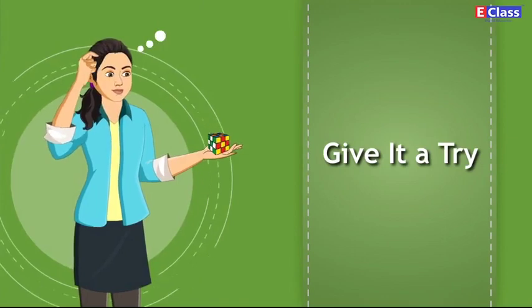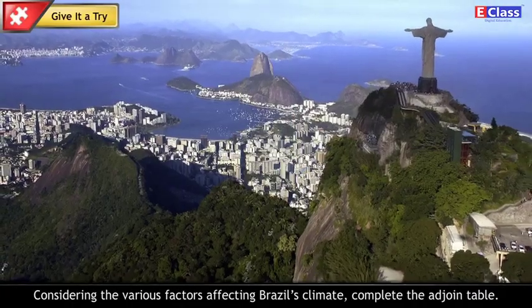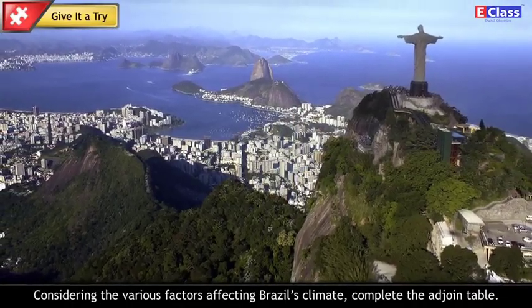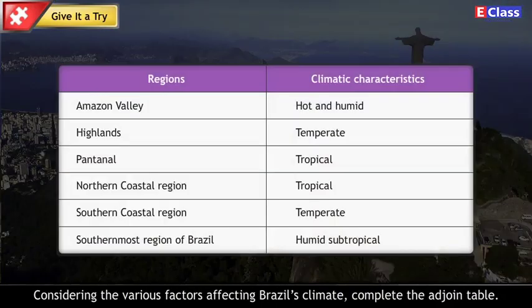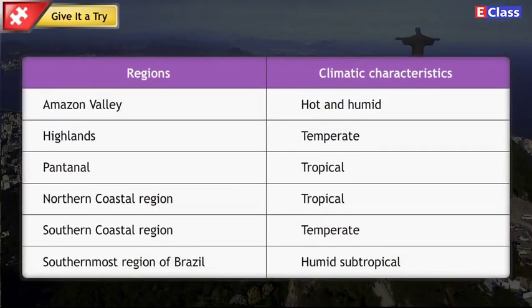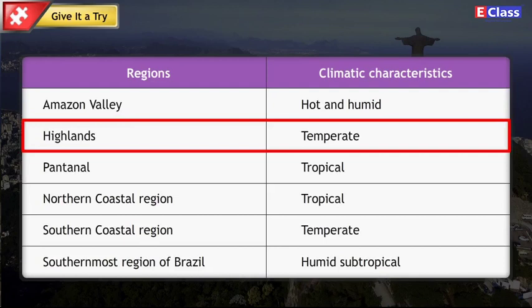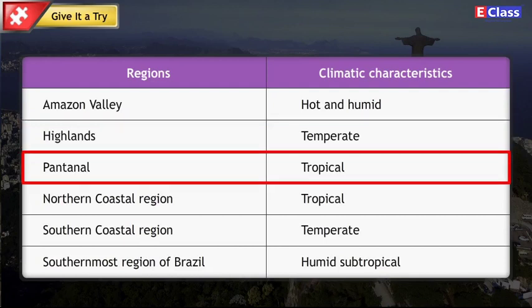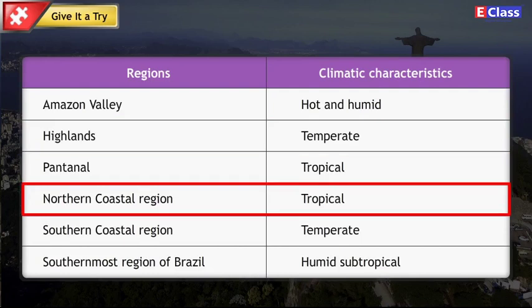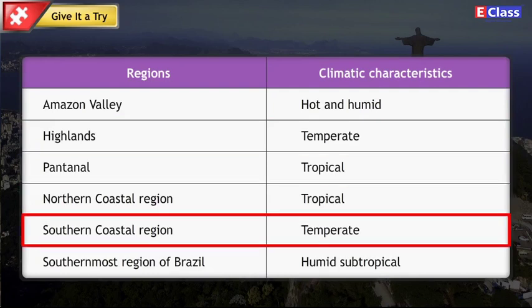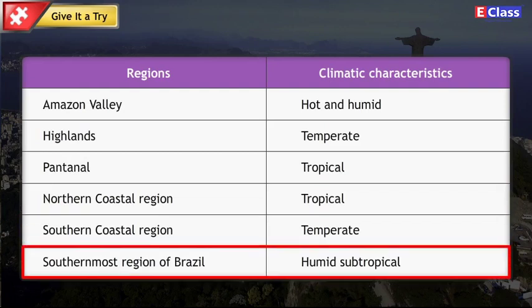Give it a try! Considering the various factors affecting Brazil's climate, complete the adjoined table. Regions and their climatic characteristics: Amazon Valley — hot and humid; Highlands — temperate; Pantanal — tropical; Northern coastal region — tropical; Southern coastal region — temperate; Southernmost region of Brazil — humid subtropical.